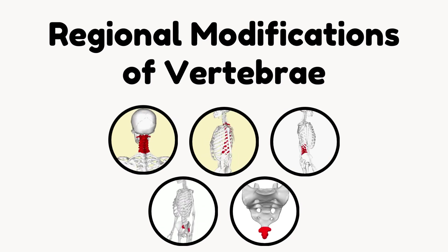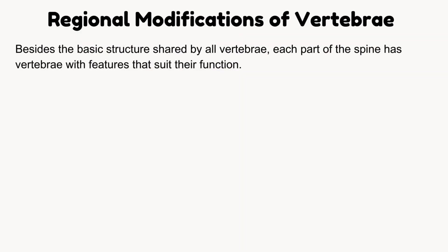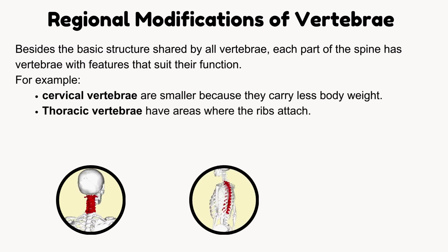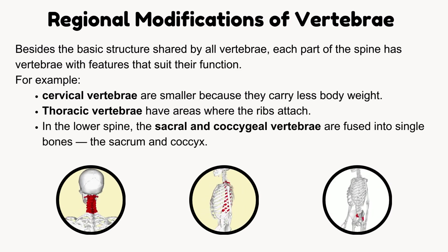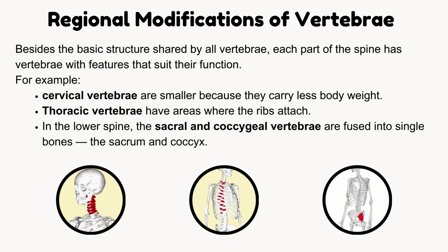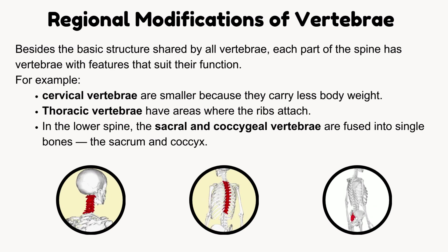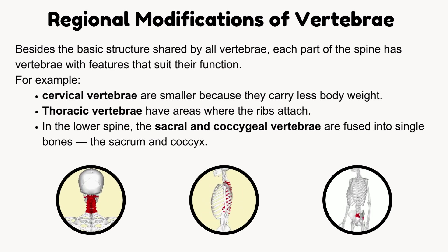Regional modifications of vertebrae. Besides the basic structure shared by all vertebrae, each part of the spine has vertebrae with features that suit their function. For example, cervical vertebrae are smaller because they carry less body weight. Thoracic vertebrae have areas where the ribs attach. In the lower spine, the sacral and coccygeal vertebrae are fused into single bones — the sacrum and coccyx. Let's discuss each vertebra in detail.